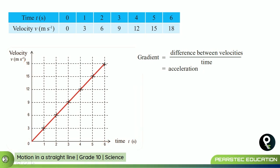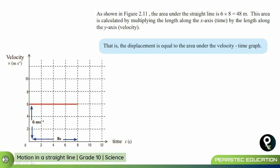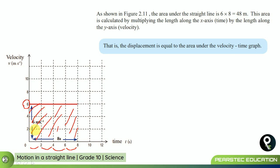Another important piece of information is the area under the straight line. In this figure, the velocity is a constant six meters per second from zero to eight seconds. You can find the displacement by multiplying six by eight, which equals 48 meters. This area is calculated by multiplying the length along the x-axis by the length along the y-axis, and this gives us the displacement.